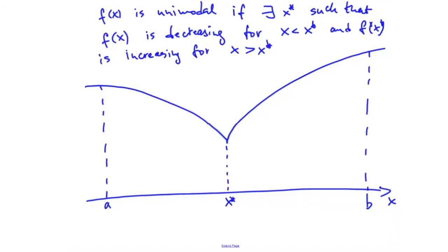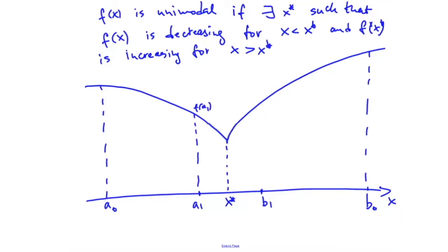So how about if we try two points? Let's rename the endpoints to a0 and b0 — this is the initial interval. We'll try two points: a1 closer to a0, and b1 closer to b0, making sure the distance from a0 to a1 equals the distance from b1 to b0. We compute f(a1) and f(b1), and suppose we see that f(b1) is greater than f(a1).